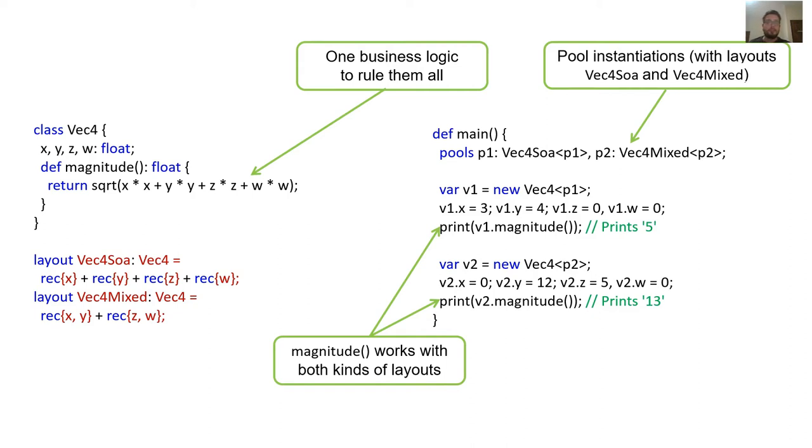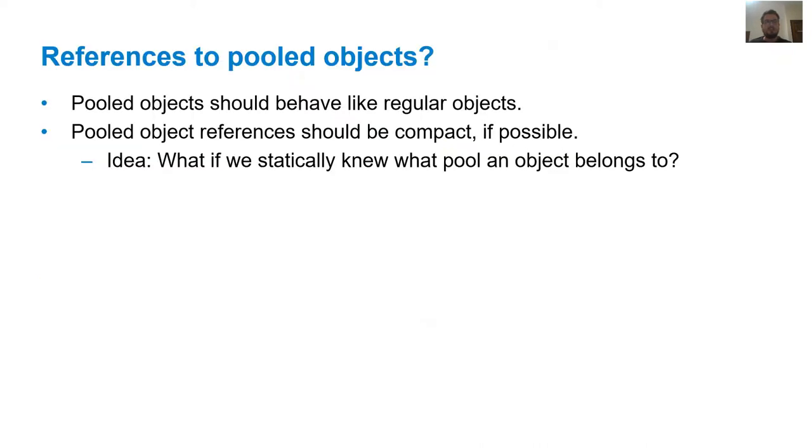Layout oblivious method calls, however, are not enough to keep the business logic layout oblivious as well. Objects in pools must behave in the exact same manner as standalone objects in a conventional object-oriented language. References to pooled objects should behave in the exact same manner as regular references. In addition, we want references to be as compact as possible and ideally have the same size as that of a conventional pointer. The problem is that the reference to a pooled object will most likely need some information on where the pool is located and where the object is located inside the pool. Can we do better than that?